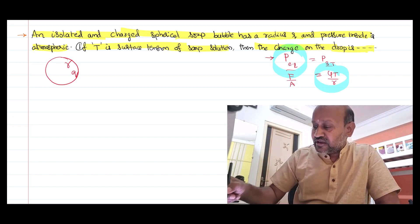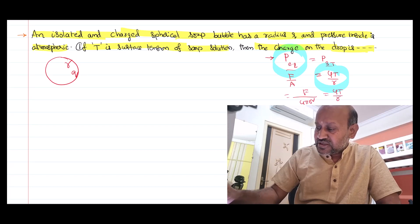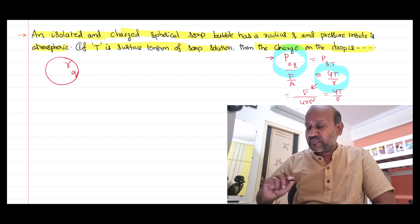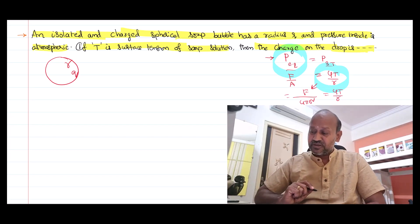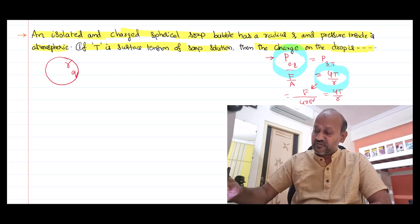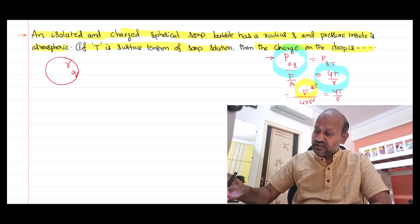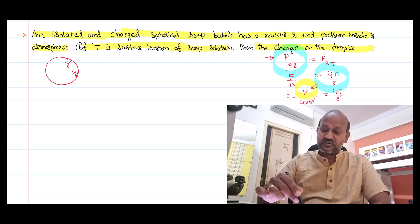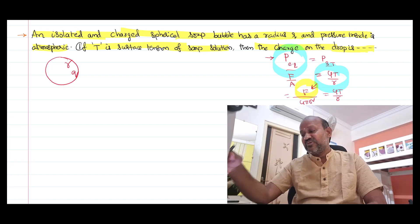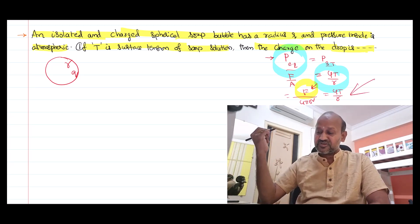The area of the soap bubble is 4πR². The thing we need to calculate is what force is developed in that spherical soap bubble due to the charge. Once we know this force, we can substitute it into the pressure equation and solve the problem.